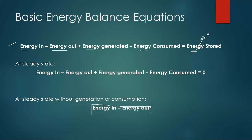If there is no generation or consumption, then at steady state: energy in equals energy out. Material and energy balance equations can be used in combination — if you don't have sufficient information from mass balance alone, you can also form an energy balance equation to find the unknown variables.